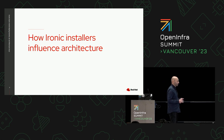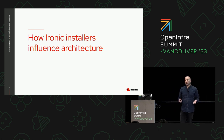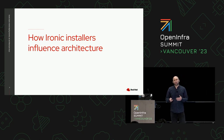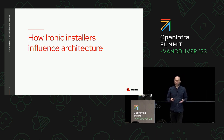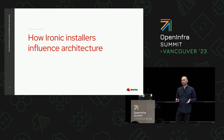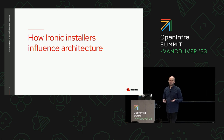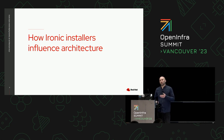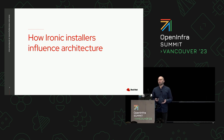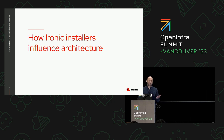First, I'd like to go through a representative sample of Ironic installers. Like all OpenStack components, there are a few options for deploying Ironic, and each of those options often have some opinionated defaults about architecture. As we go through them, we'll learn different use cases for Ironic and different capabilities that different installers will expose.